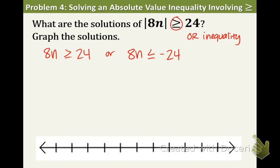So just in case you're confused about this setup, let me restate some things. The inequality says that 8n is at least 24 units from 0 on a number line. That's what that greater than or equal to symbol means. And in order to be at least 24 units away from 0, 8n can be less than or equal to negative 24, which is this part right here, or 8n can be greater than or equal to positive 24.